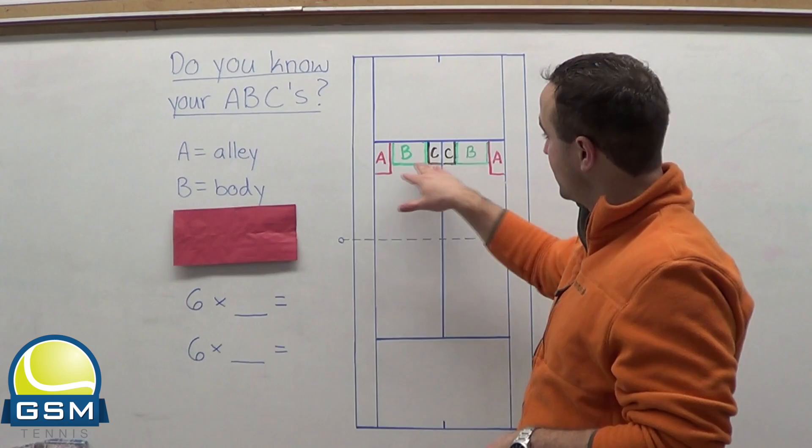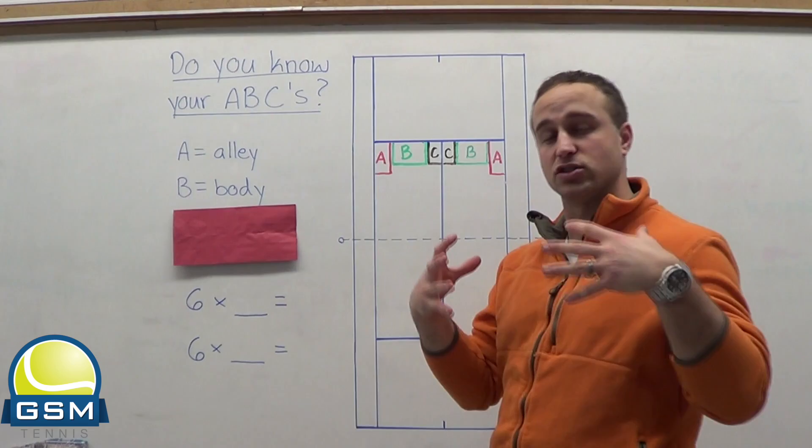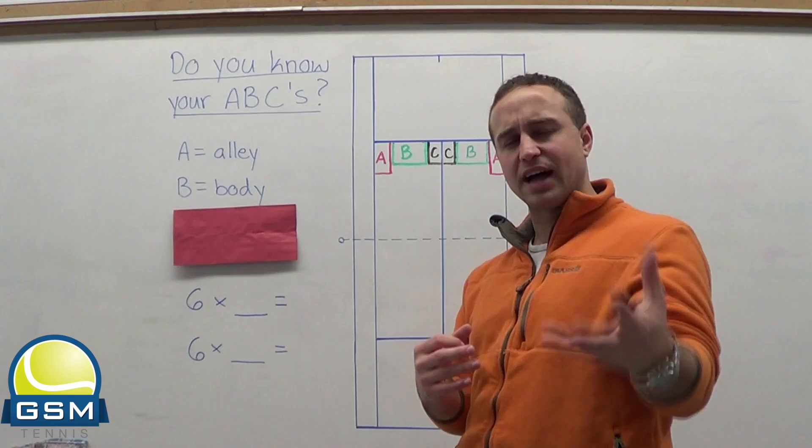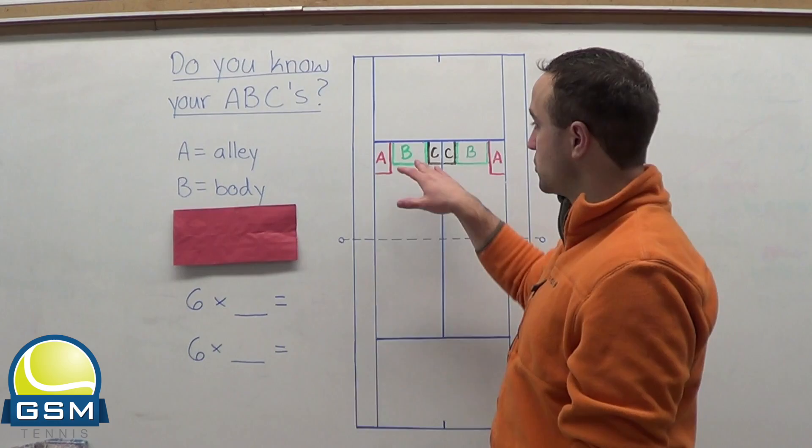I like to use it a lot when I'm playing against bigger, taller players, even sometimes against really fast players. Because really fast players tend to be able to move left and right, but they lots of times struggle when the ball goes right at them. They don't know how to get out of the way of their own body. So you have that body serve where you're going right at them and you're aiming right at the hips.